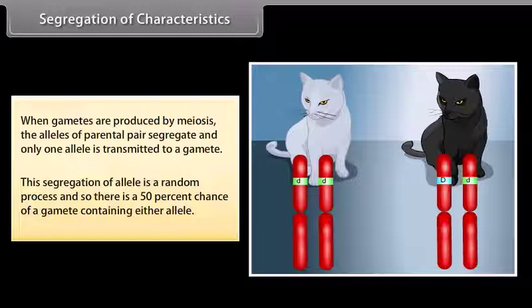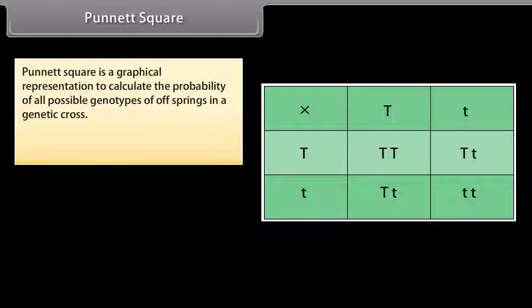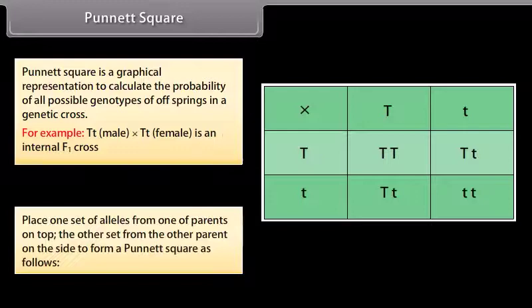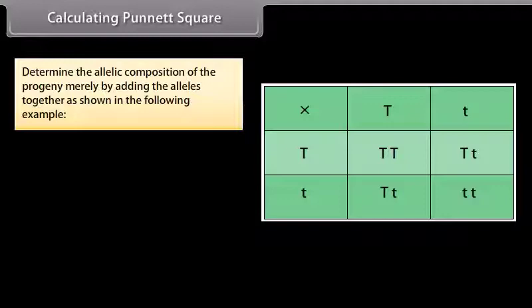Punnett square. A Punnett square is a graphical representation used to calculate the probability of all possible genotypes of offspring in a genetic cross. For example, a TT male crossed with a Tt female is an internal F1 cross. Place one set of alleles from one parent on top and the other set from the other parent on the side to form the Punnett square. Determine the allelic composition of the progeny by adding the alleles together, resulting in the following F2 generation.